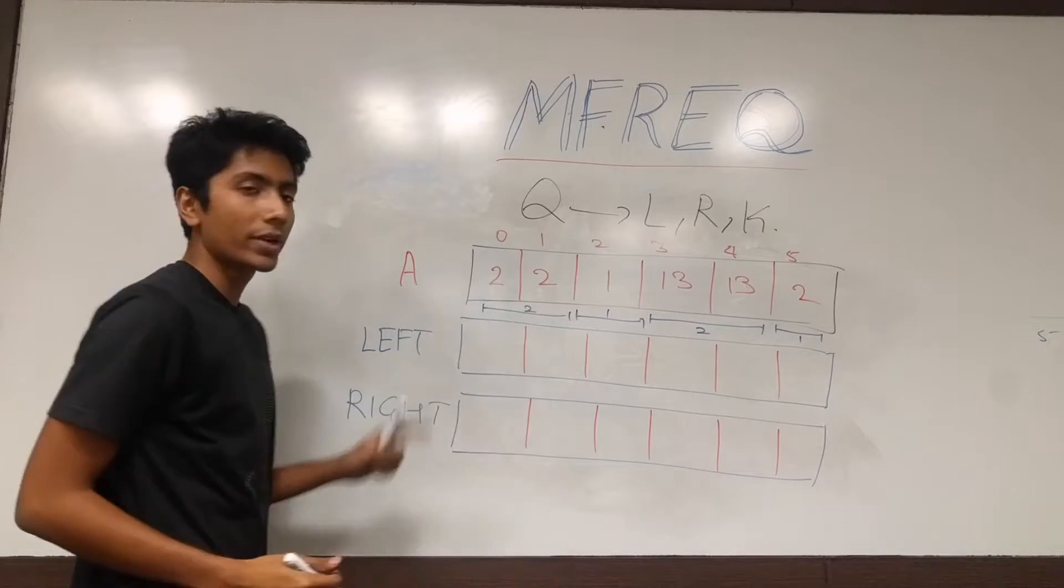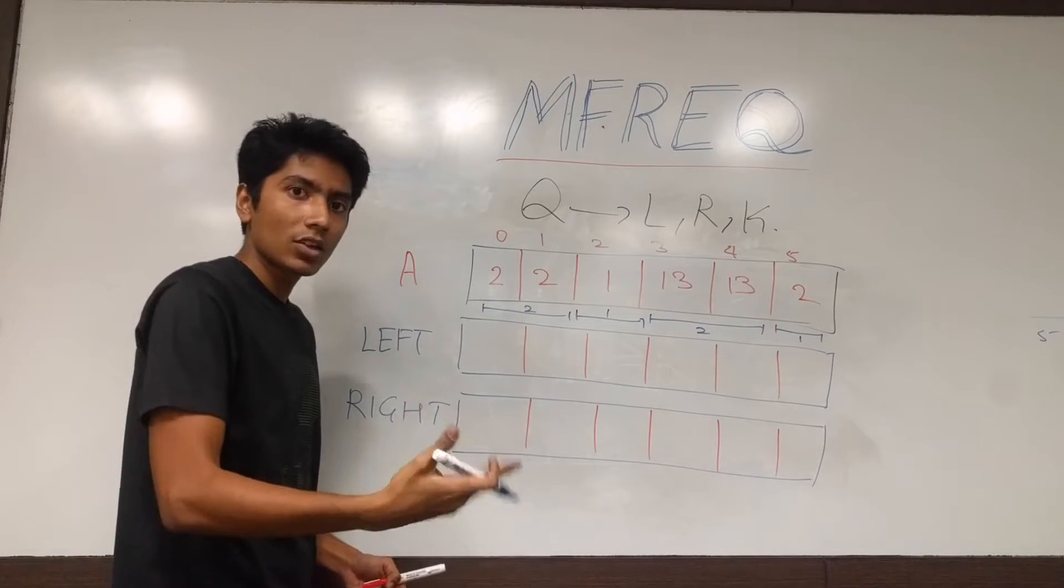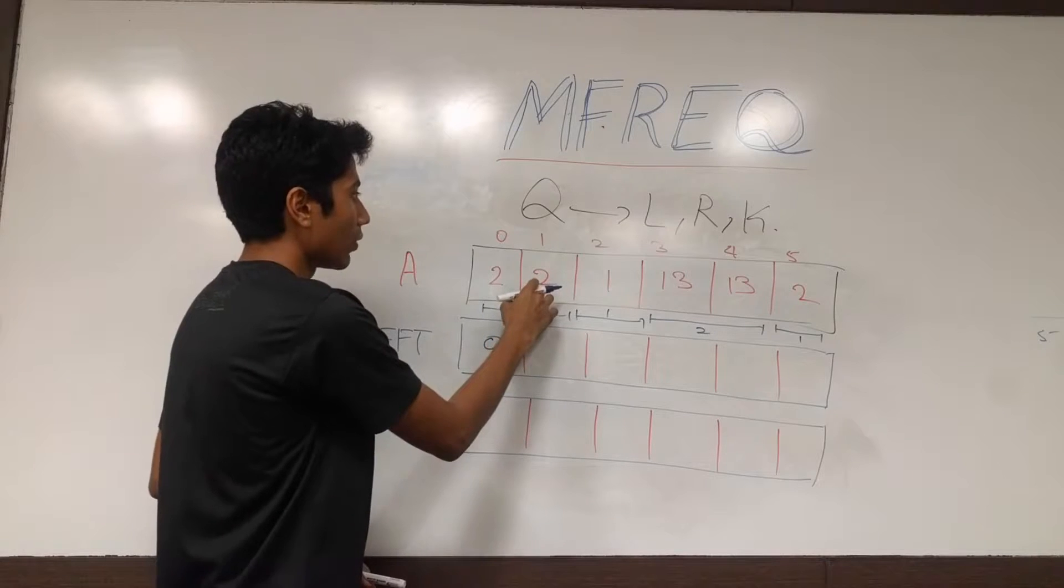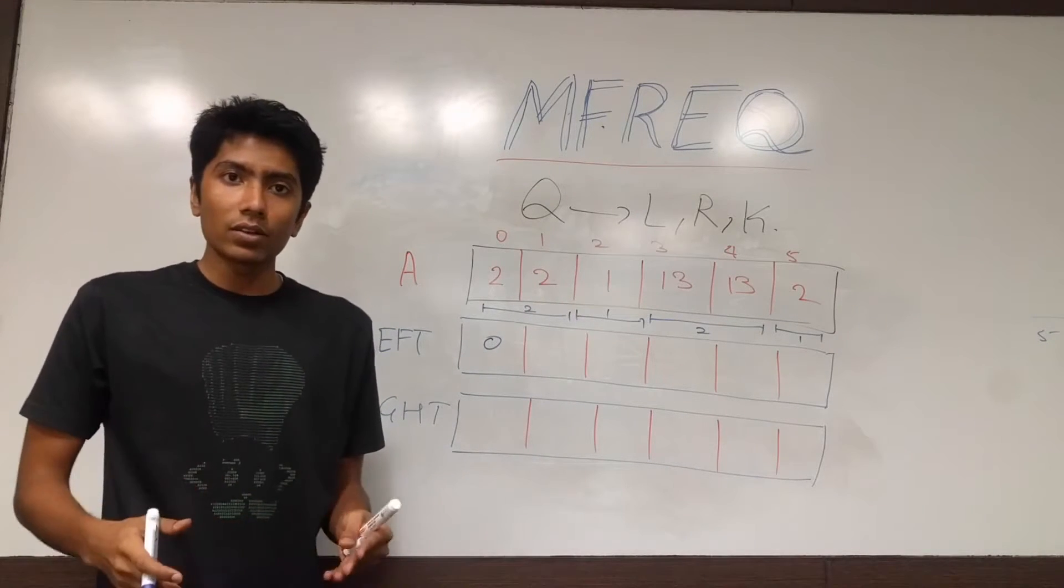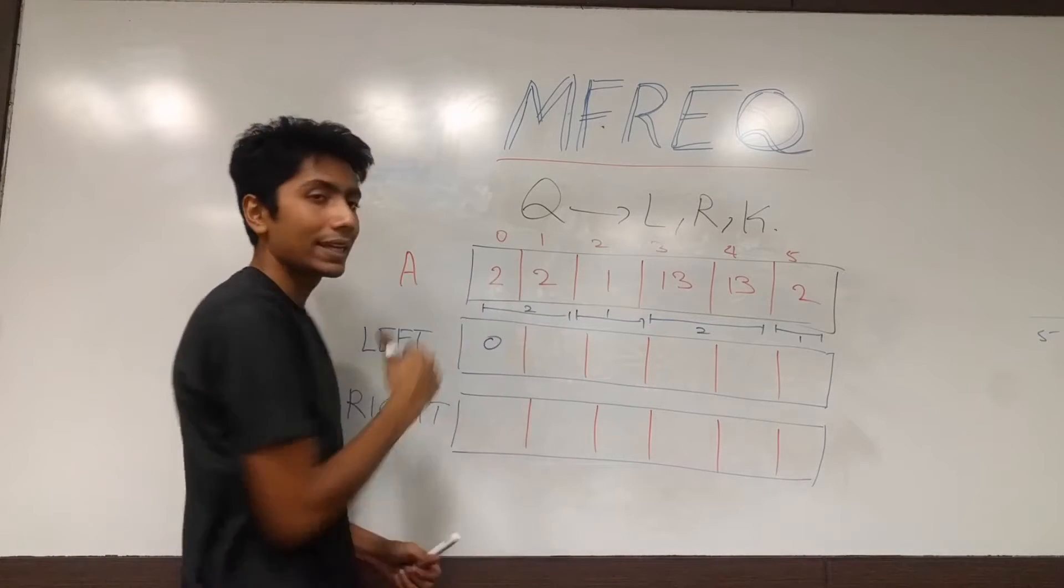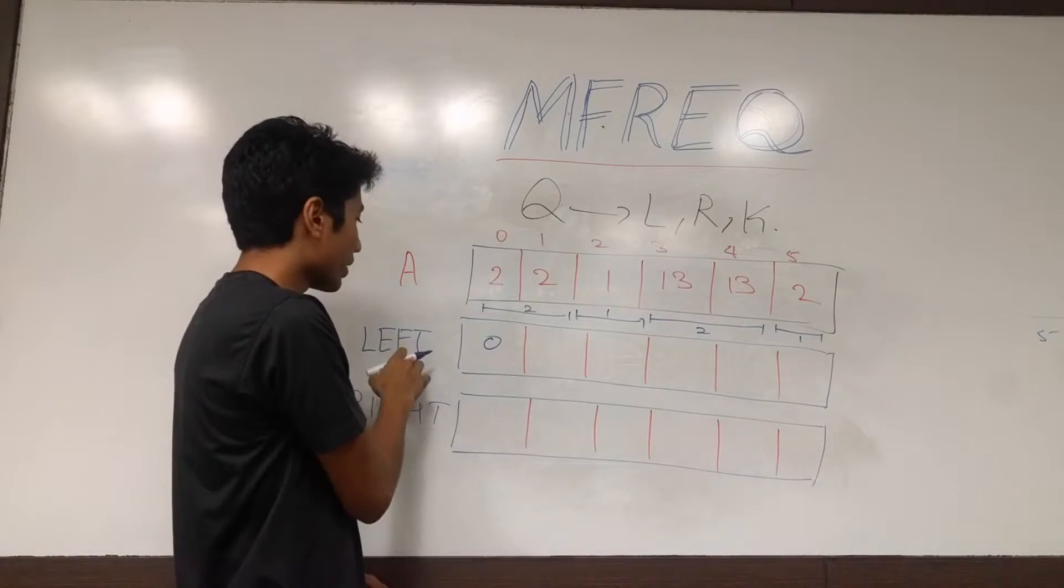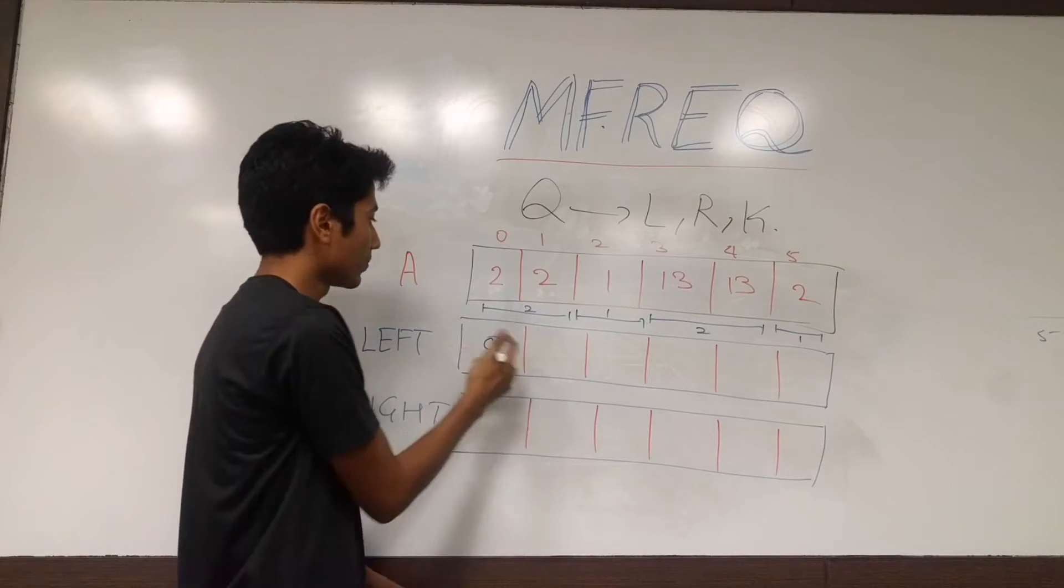We come to the first element 2, there's nothing to the left. So we store the leftmost index of that element, which is 0. Now we come to this 2, we are going to check if the element that was previous to this is equal to it. Is 2 equal to 2? Yes. Then we are going to be storing whatever answer is on that element's leftmost. So that will be 0.